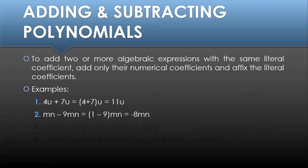Next example, we have mn minus 9mn. They have the same literal coefficient, so let's just subtract their numerical coefficients. In mn, we have an invisible coefficient of 1. So that's why we have 1 minus 9, which gives us negative 8. The answer is negative 8mn.